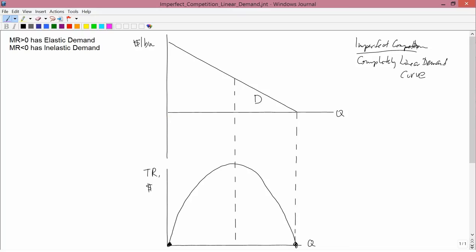It turns out, and it's pretty intuitive, that the total revenue curve has this kind of general shape. It turns out that it's a perfect parabola - it's a quadratic equation. I'll prove that at the end for those interested, but I'm not going to ask anything about that on an exam.